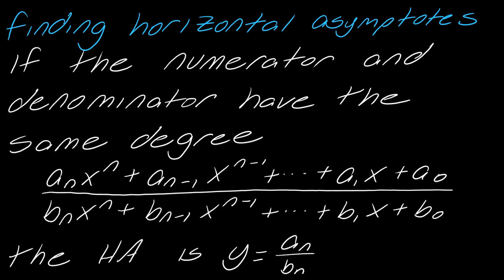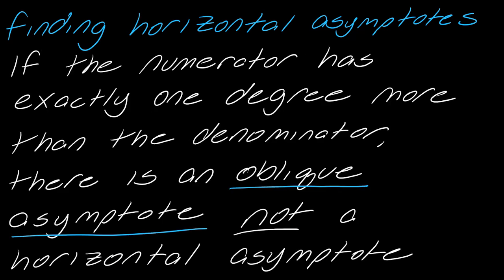If the numerator and denominator have the same degree, you take the leading coefficient of the top and the leading coefficient of the bottom — that ratio is your asymptote. Now, if the numerator has exactly one degree more than the denominator, then there is an oblique asymptote, not a horizontal asymptote. So you can get this whole job done just by looking at the degree of the top and the bottom.